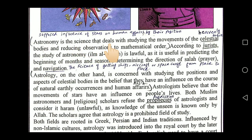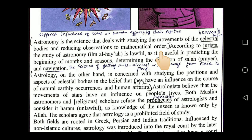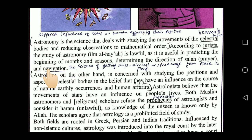Astronomy is the science that deals with studying the movement of celestial bodies and reducing observation to mathematical order. It means we get knowledge relating to the movement of stars and the outcomes are given in mathematical order. According to the jurists, the study of astronomy — called in Arabic 'ilmul ahiyya' — is lawful.